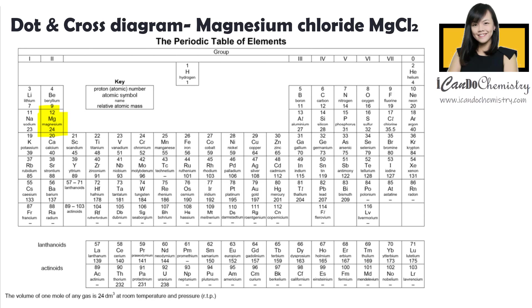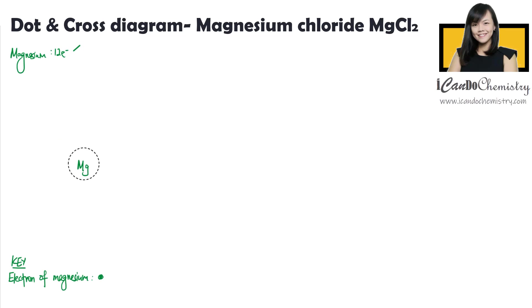Let's focus on magnesium now. It is here in the periodic table. Magnesium has 12 electrons. We will use dots to represent the electrons of magnesium. The first shell holds two electrons, the second shell holds eight electrons, and the last two electrons are in the third shell.